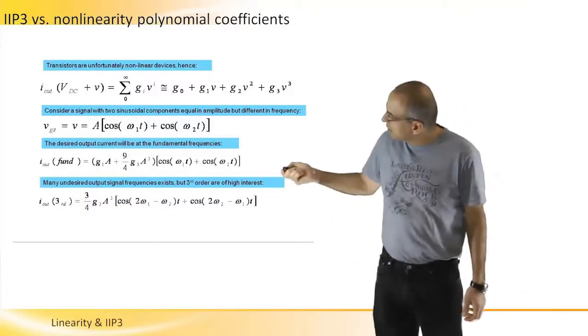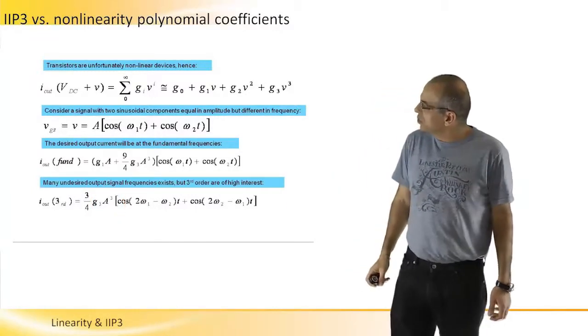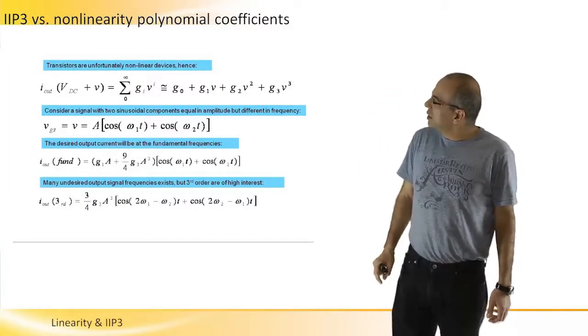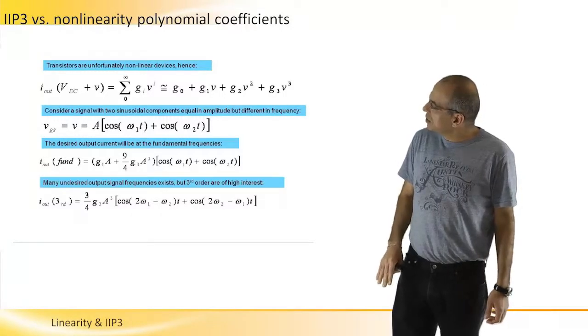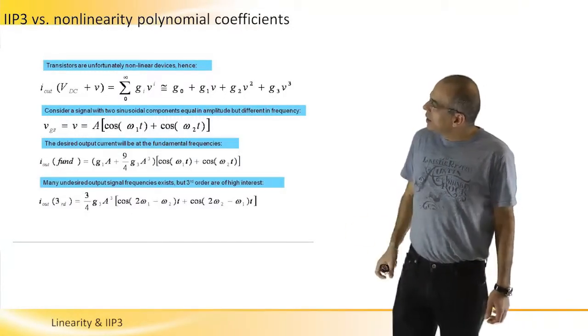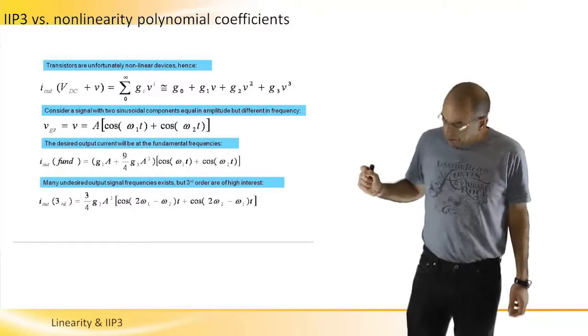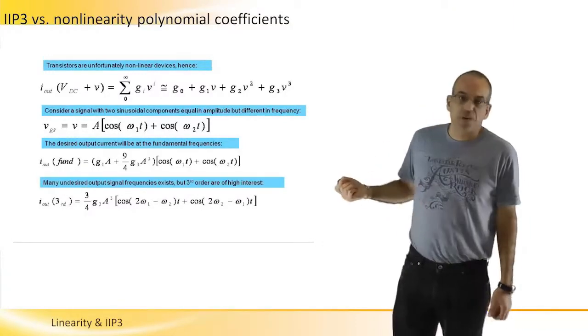And if we look at the third order products, we will find that this is the factor that multiplies them. And what we can see here is we have A to the third. That's something that we described before, describing that these products really have third order behavior.